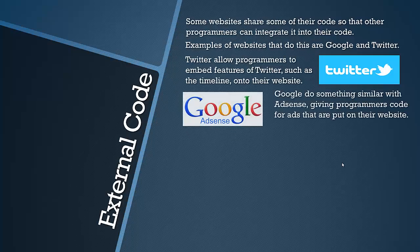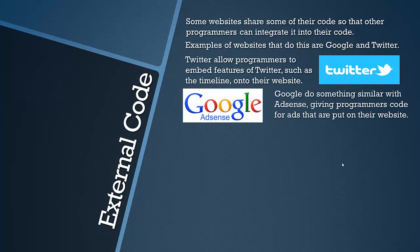Another website that does this is Google — mainly through AdSense. AdSense is Google's ads. You can see them on websites; I've done this when I've made a website before. You basically go on their AdSense website, create your own ad, specify the size and height and what's going to be in it, and they give you the code. You literally copy and paste it onto your website and it's good to go. This is an example of code from an external source which you haven't actually written yourself.